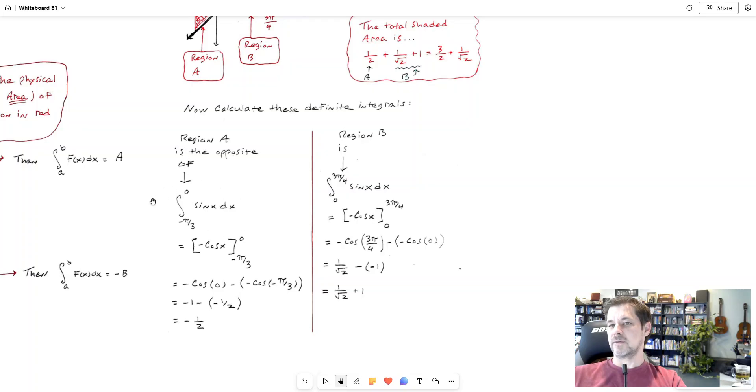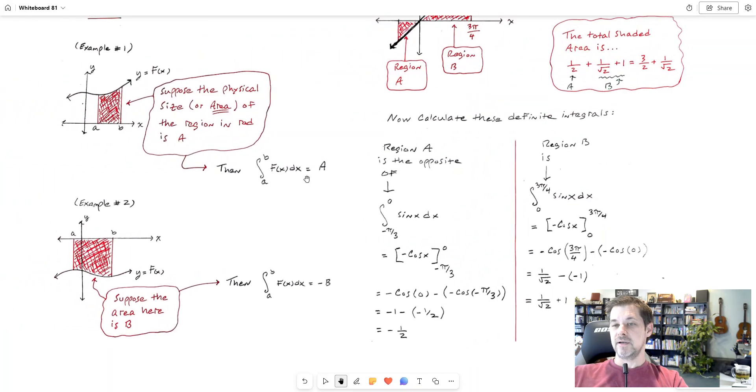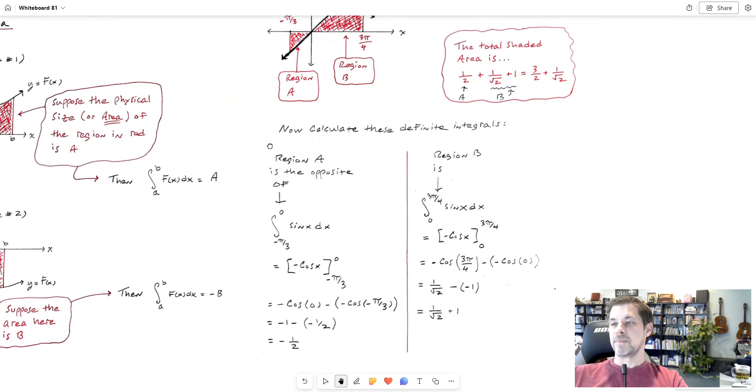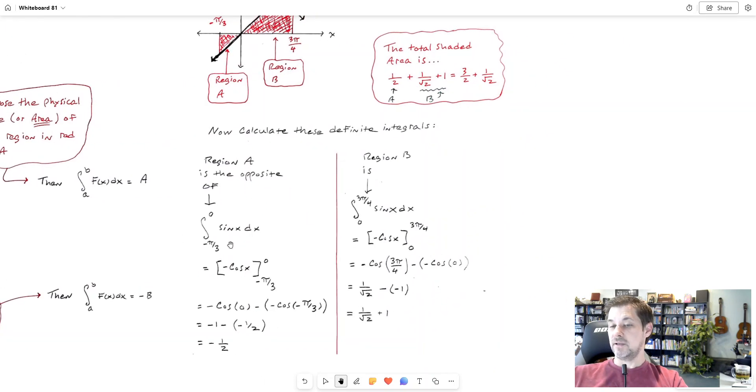Okay, so region A is going to be the opposite of this integral right here: negative pi over 3 to 0, sine x dx. Now one thing I haven't talked about yet in this video is once you get this integral set up, how do you solve it? To solve a definite integral we use the fundamental theorem of calculus where I find the antiderivative of this.